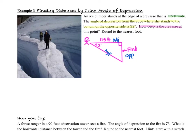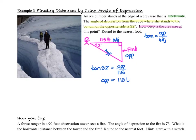We know that this is our hypotenuse and this is our adjacent side. We are trying to find the opposite and we have the adjacent, so that means we're using the tangent. Tangent is equal to opposite over adjacent, so the tangent of 52 degrees is going to be equal to the opposite over 115. Our units are going to be feet, and in order to find the opposite, we multiply both sides by 115. We leave the rest to our calculator, and we end up with the depth of the crevasse as 147 feet when we round to the nearest foot.